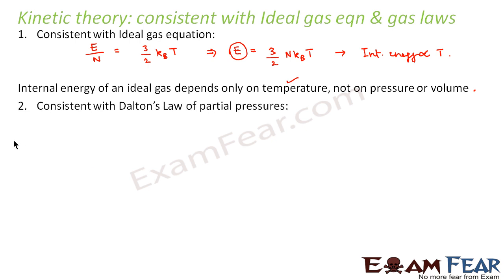Now let us look at the consistency with a gas law, that is Dalton's law of partial pressure. Now for a mixture of ideal gases, the total pressure P will be equal to 1/3 nm v̄² from kinetic theory. Therefore, we can say that if a vessel consists of a mixture of gases, that will be 1/3 n₁m₁v̄₁² + n₂m₂v̄₂² + and so on.